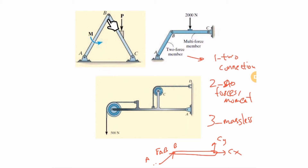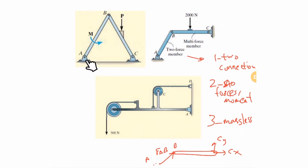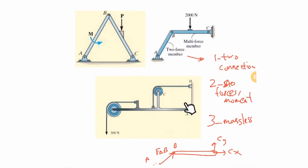Doing free body diagrams for frames follows the same approach as before: wherever you have a pin you have two unknowns, remove every connection and put the reactions there, and try to match the number of unknowns with the number of equations. In problems involving pulleys, which may be new compared to previous videos, there are specific rules to follow.